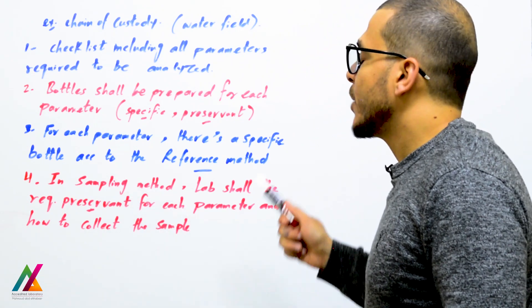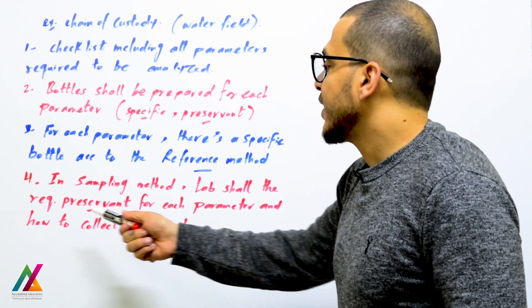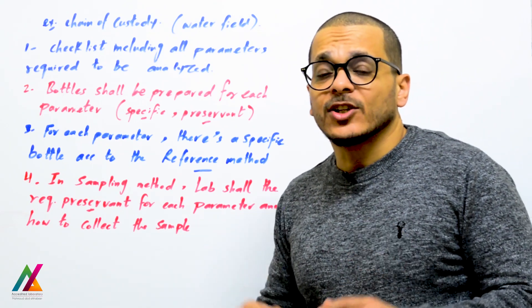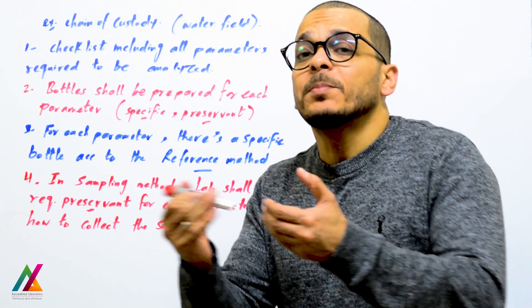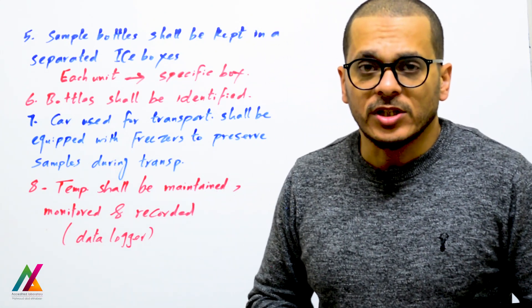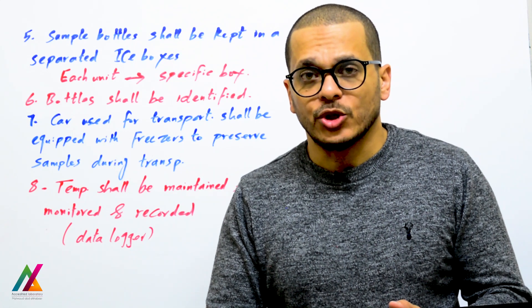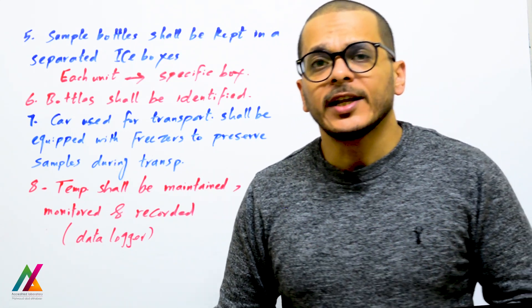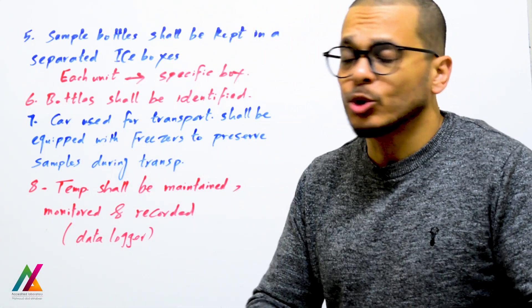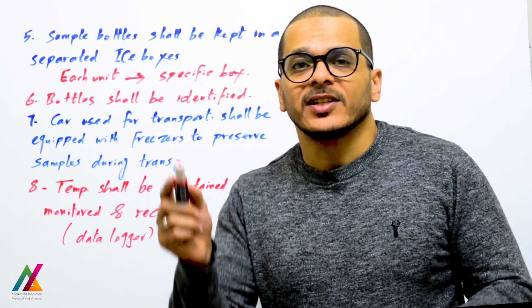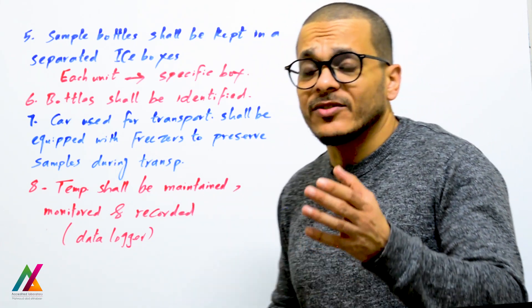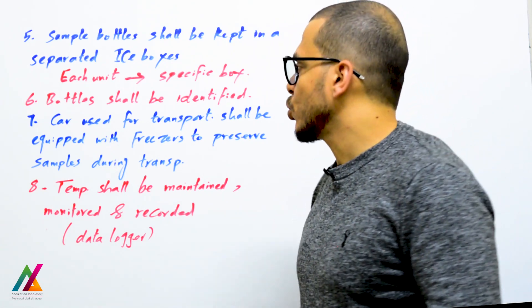The lab shall identify the required preservant for each parameter and how to collect the sample so it will be representative of the parameter of interest. Sample bottles shall be kept in separated ice boxes for each unit — microbiology, inorganic, and organic each have a specific ice box containing only their bottles, making it easy to retrieve the correct bottle during sample collection. Bottles shall be identified with a specific label and color for each unit.